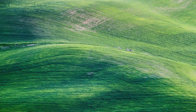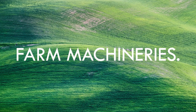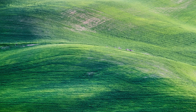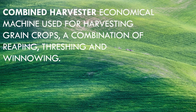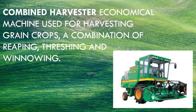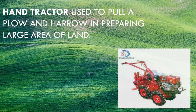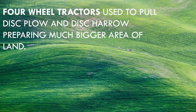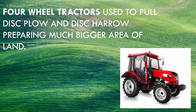And those are the accessories. Now we have machineries to use them. Combined harvester: an economical machine used for harvesting grain crops — a combination of reaping, threshing, and winnowing. Hand tractor: used to pull plow and harrow in preparing large areas of land. Four-wheel tractor: used to pull disc plow and disc harrow, preparing much bigger areas of land.